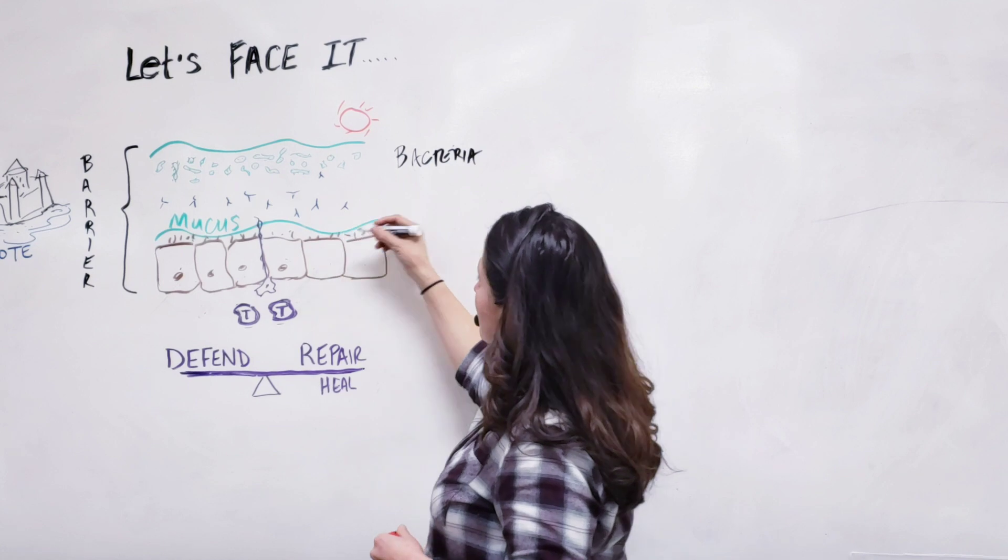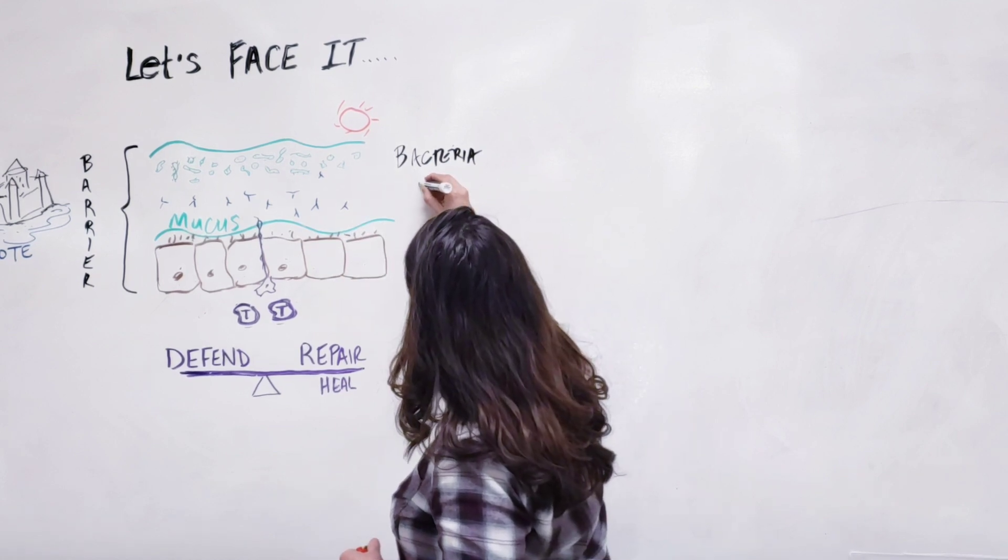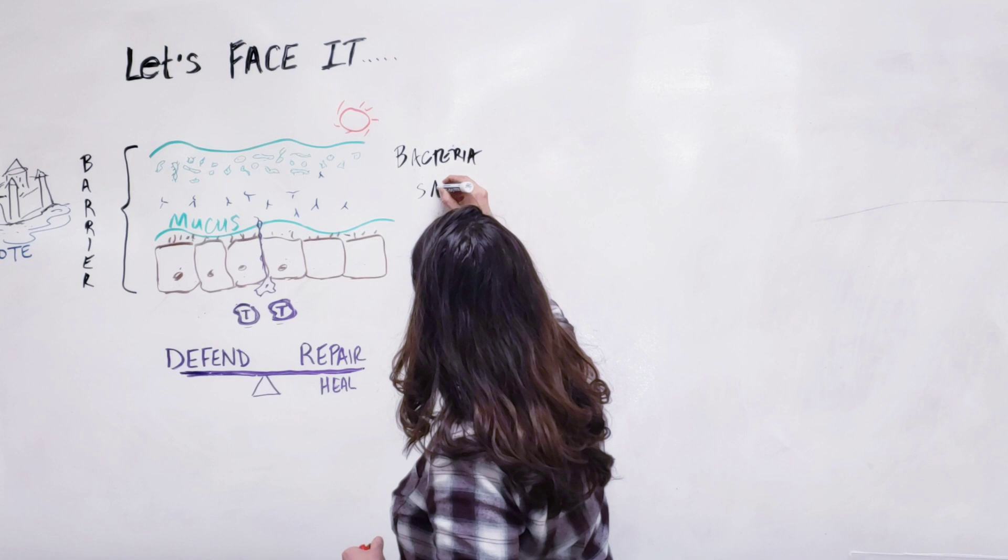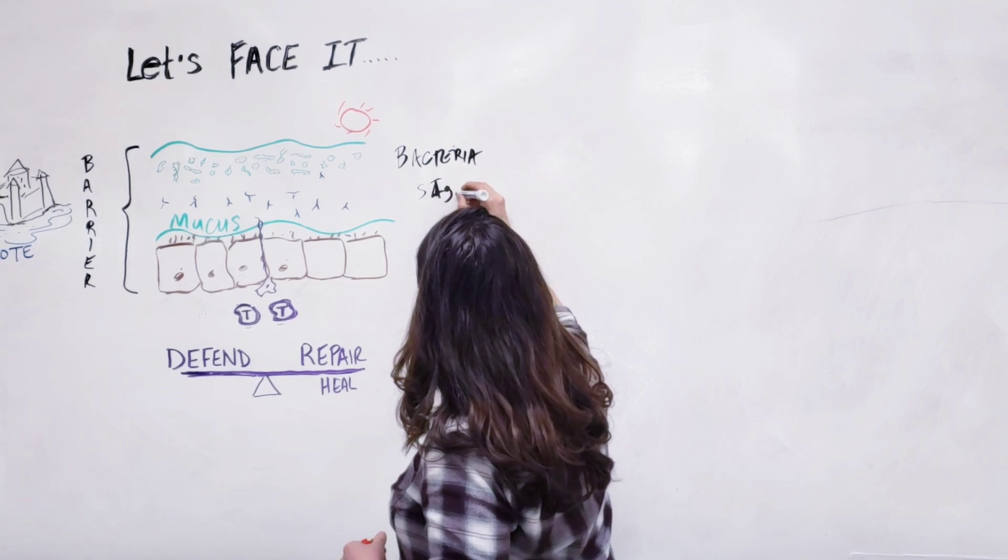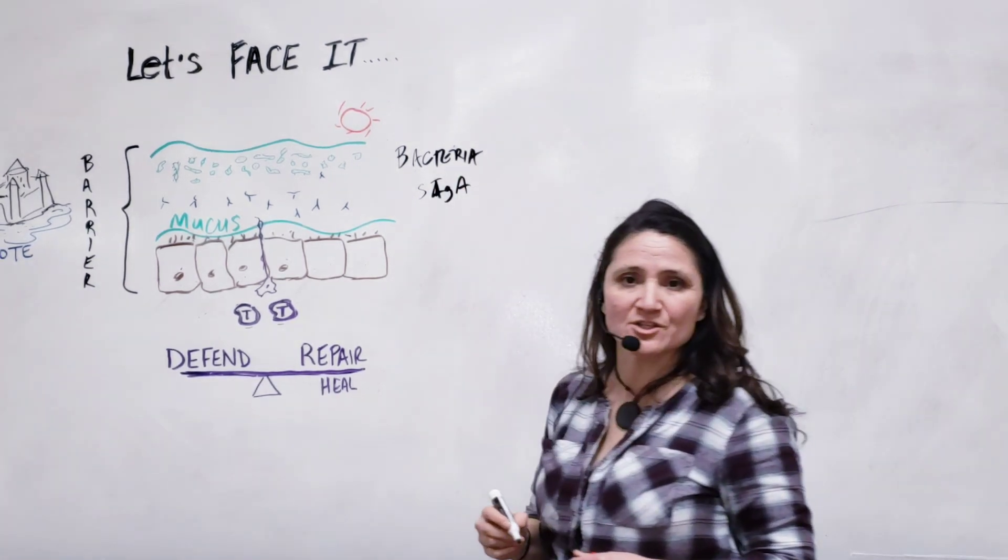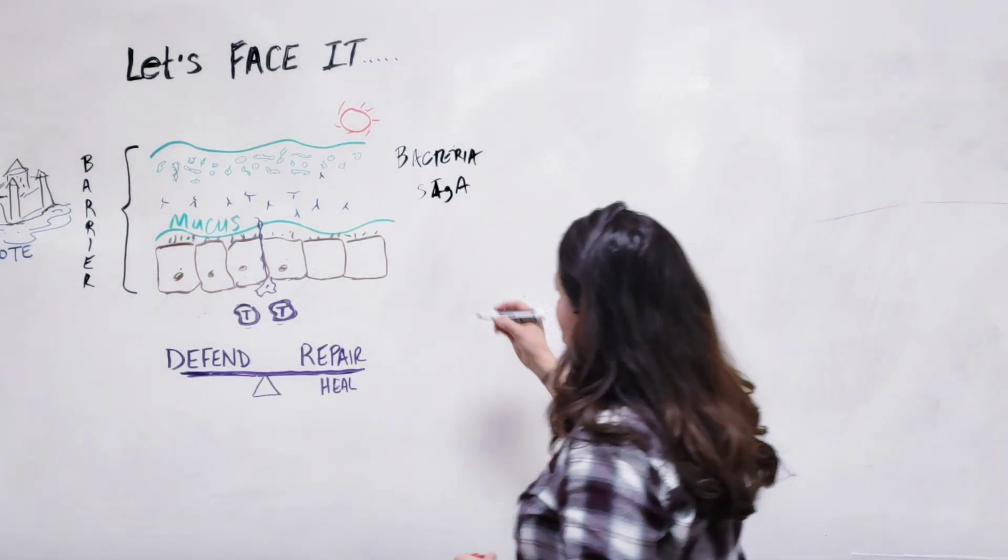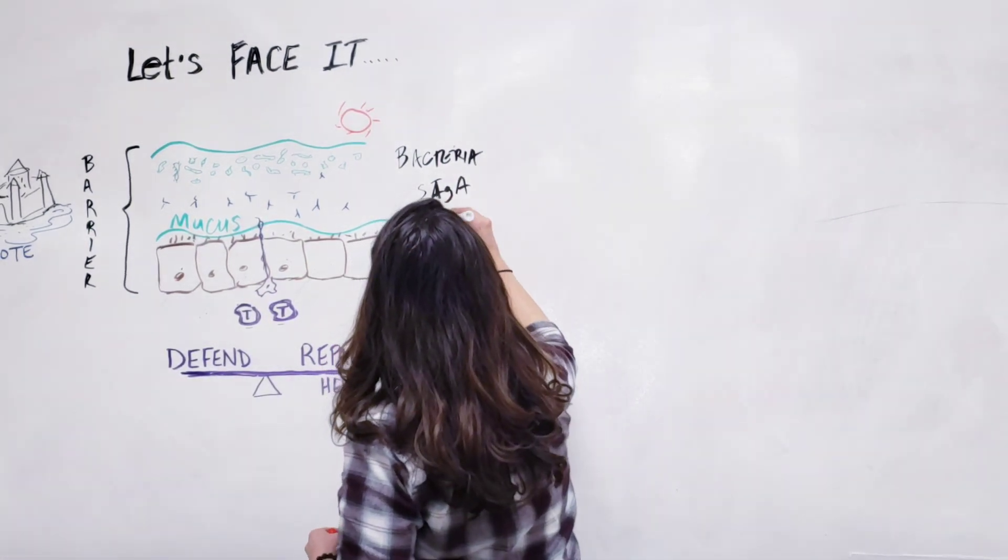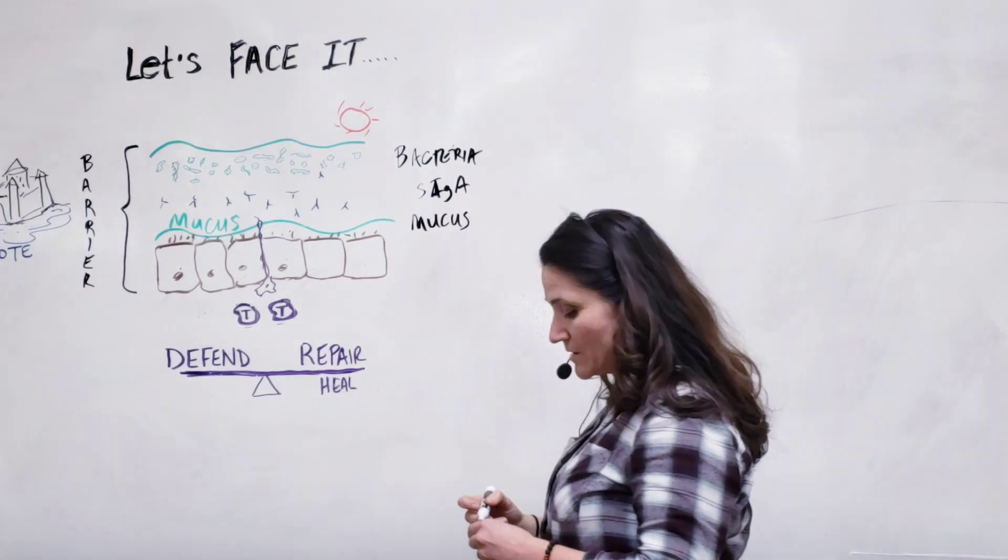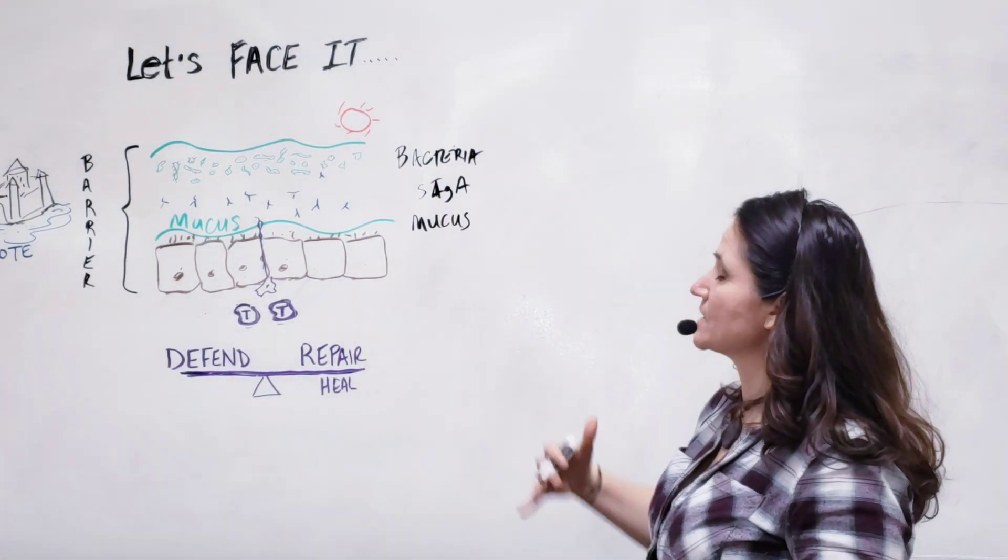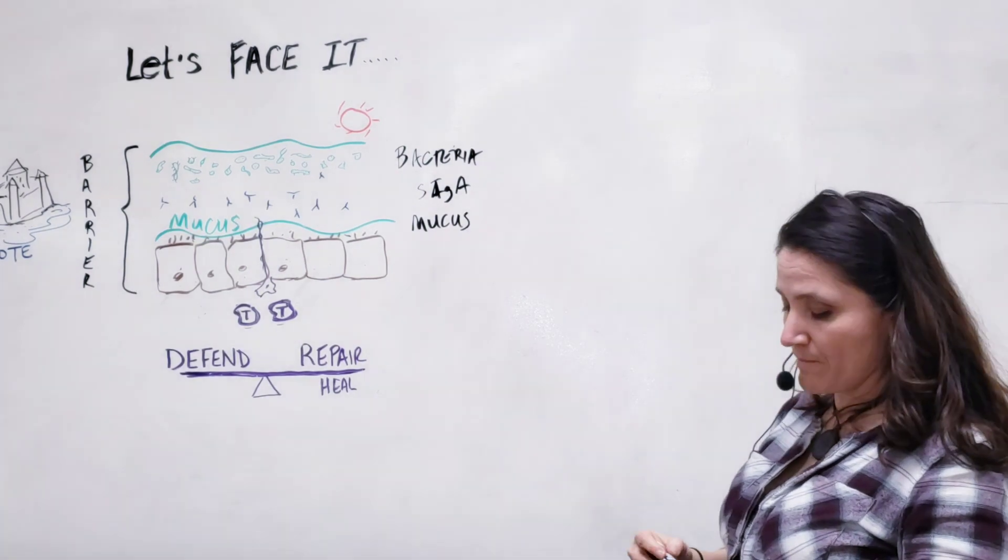The second layer within that mucosa layer is some immunoglobulins, such as secretory IgA. It's a type of protein that has some immune properties that helps protect us. Then the mucosa surface just physically has ability to protect us from a virus that's trying to make its way into our bodies.